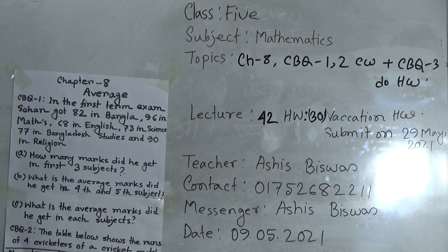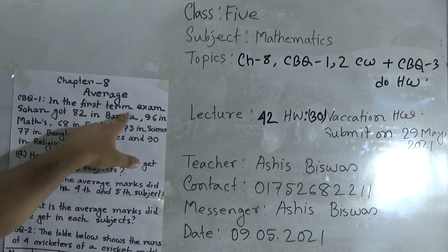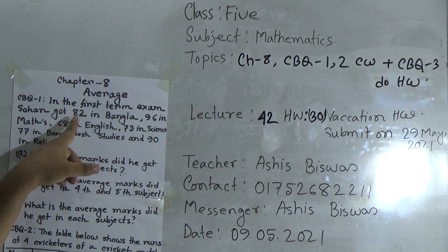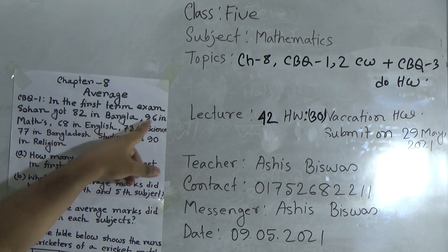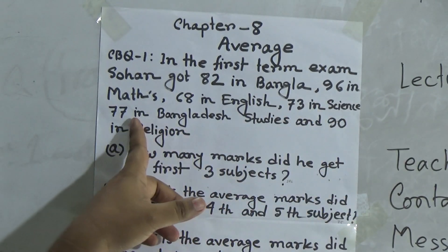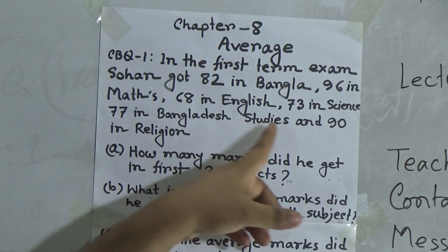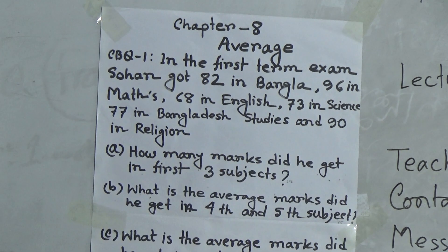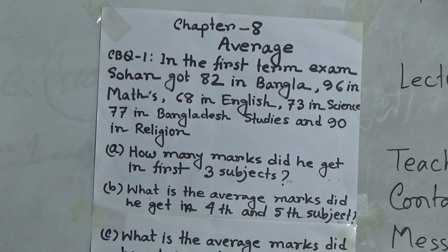At first we read CBQ number 1. In the first term exam, Shohan got 82 in Bangla, 96 in Math, 68 in English, 73 in Science, 77 in Bangladesh Studies and 90 in Religion.